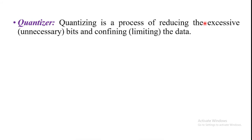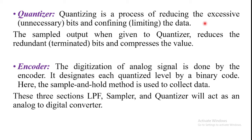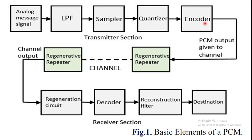Now we are going to discuss the receiver section. In the receiver section, the blocks are: the regenerative repeater circuit, the decoder, the reconstruction filter, and the destination.